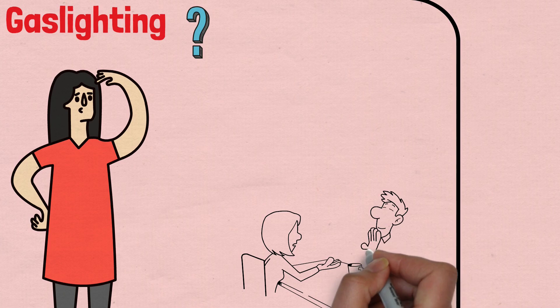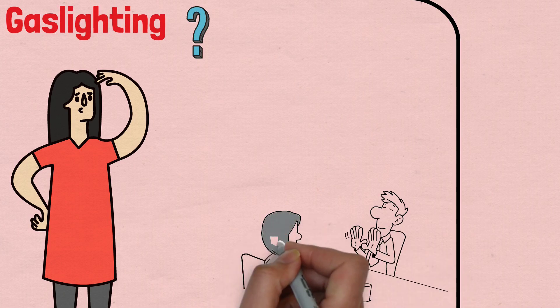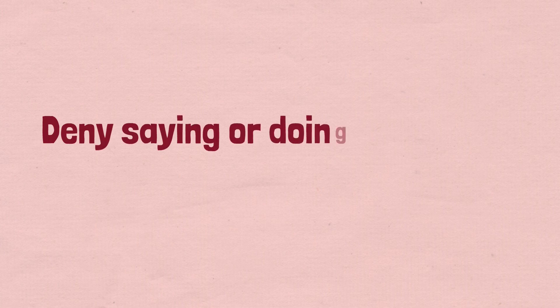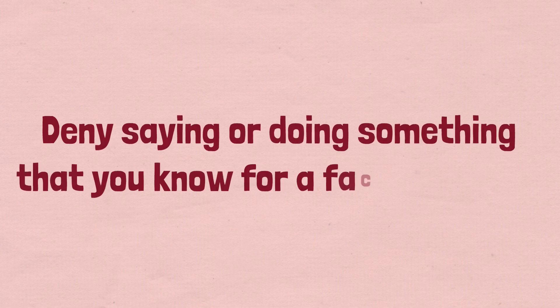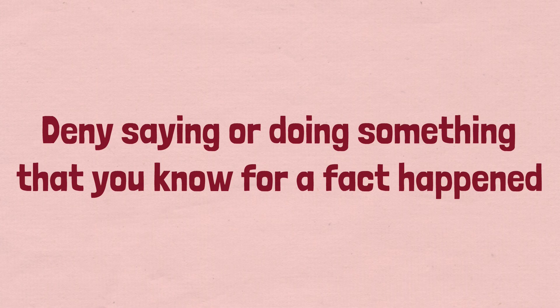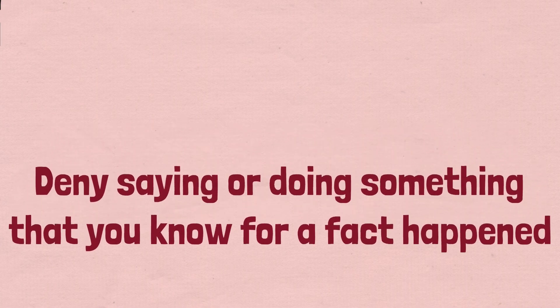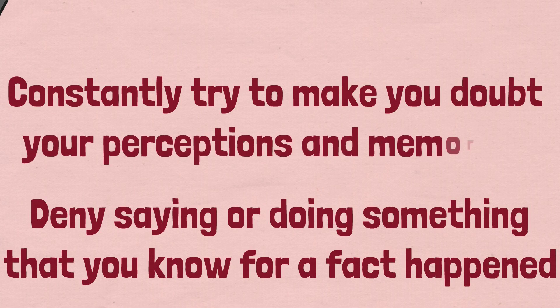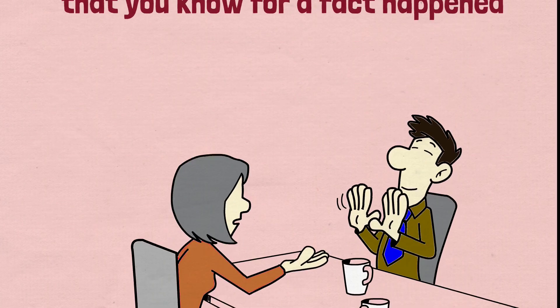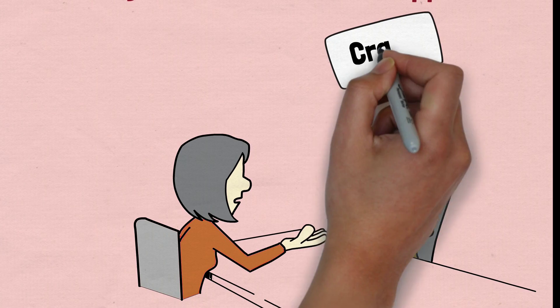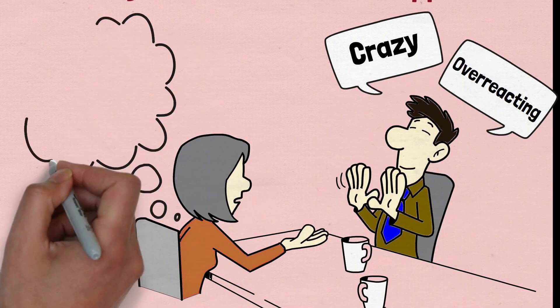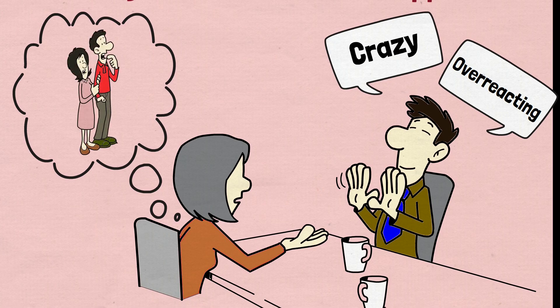So how do you know you're being gaslighted in a relationship? First, does your partner constantly deny things that you know happened? For example, do they deny saying or doing something that you know for a fact happened? This is a classic gaslighting tactic. Also, do they constantly try to make you doubt your perceptions and memories? This can come in the form of them telling you that you're crazy or overreacting, or even going as far as to deny things that you both witnessed together.